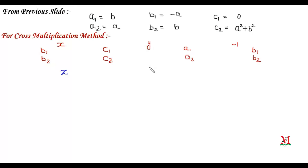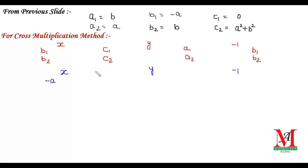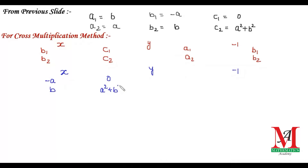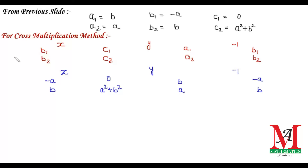Now we have the values of a1, b1, c1, a2, b2, c2, as well as the method for cross multiplication. We will put: b1 as minus a, b2 as b, c1 as 0, c2 as a² plus b², a1 as b, a2 as a, and b1 as minus a, b2 as b. We now apply the cross multiplication method, as you see on the screen.